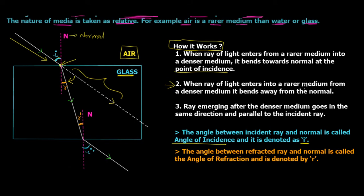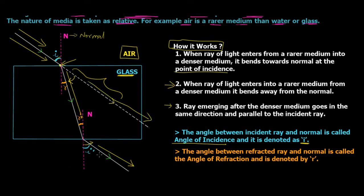Point two: when a ray of light enters a rarer medium from a denser medium, it bends away from the normal. Once inside the glass, the ray travels in a straight line, but when it exits into air it moves away from the normal, creating angles i' and r'. Point three: the ray emerging after the denser medium travels in the same direction and parallel to the incident ray — they never meet but are slightly displaced.